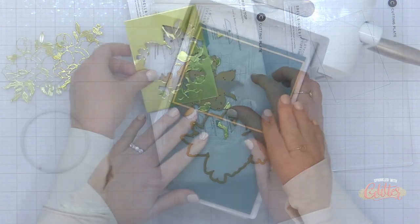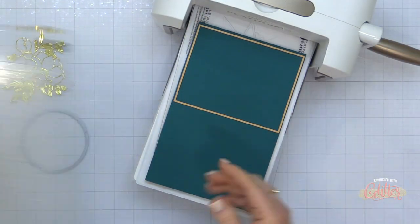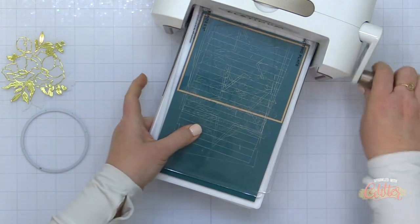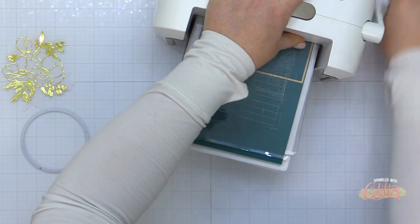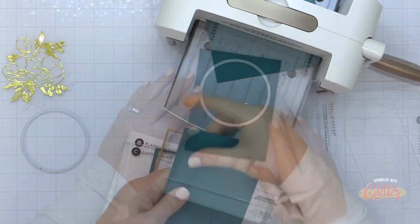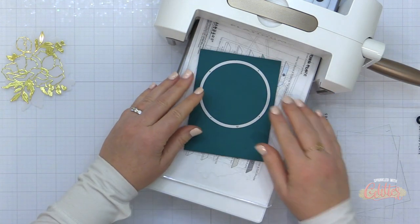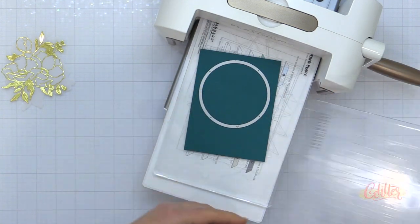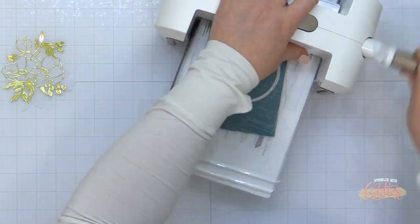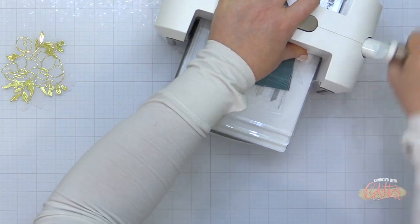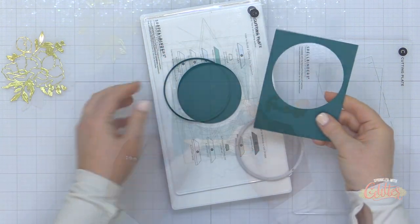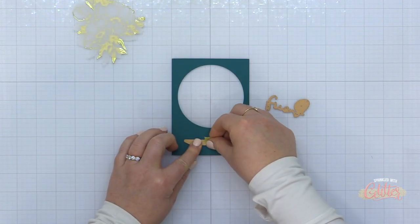So you can see how those layer on top of each other and I am going to create a window card with this. This was my first idea when I saw this collection of products. I am using some A2 rectangle dies from Spellbinders and die cutting a piece of blue spruce cardstock, so I have a nice card front panel here, and then I will use a circle die to die cut a window from this panel. I chose my circle based on the size of the die cut that I'm using.